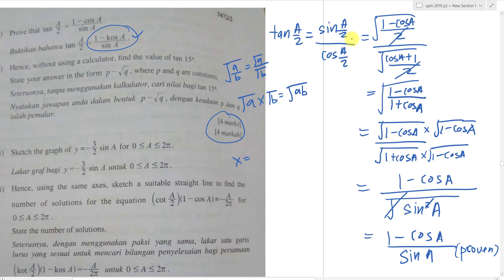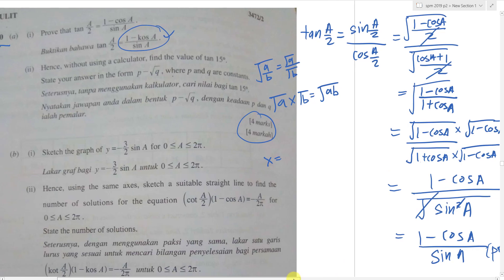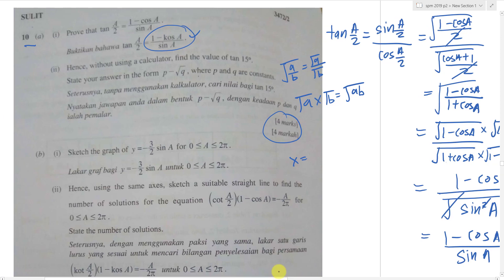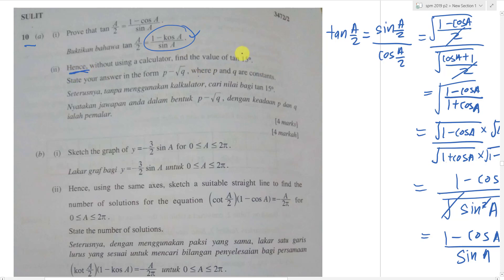I made a separate video spending 8 minutes explaining this part. In the exam you need to do it faster. Now Part 2: without using a calculator, find tan 15°. The word 'hence' tells me to use the answer above. Since this involves a/2, I need a/2 = 15°, so a = 30°.